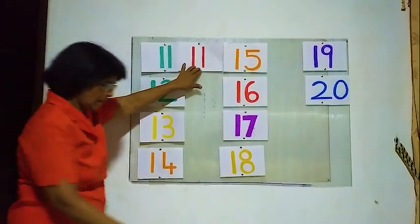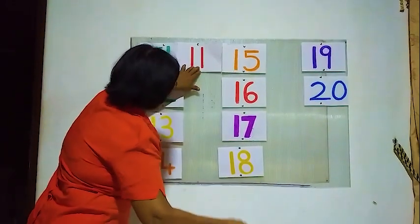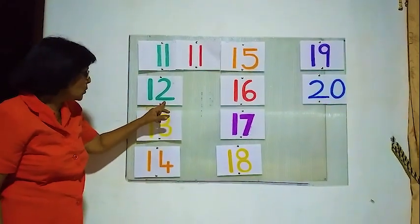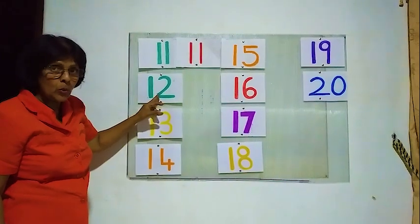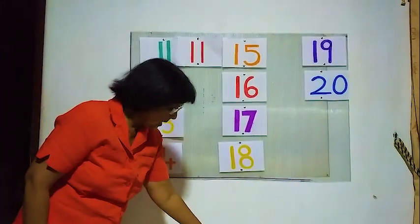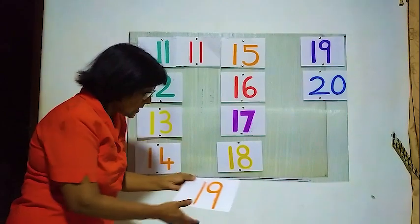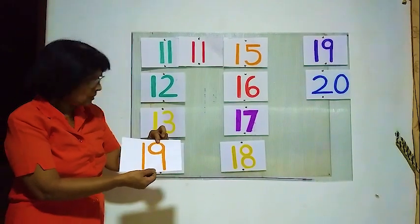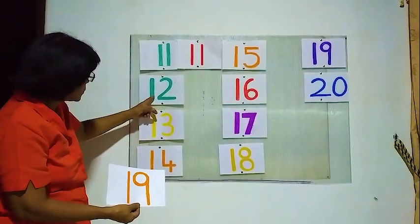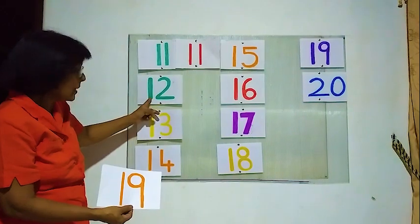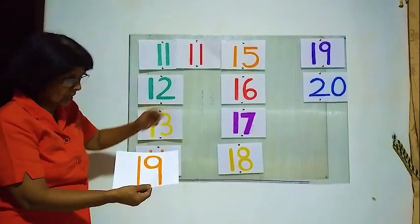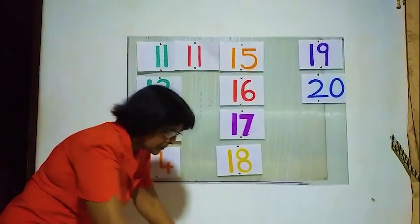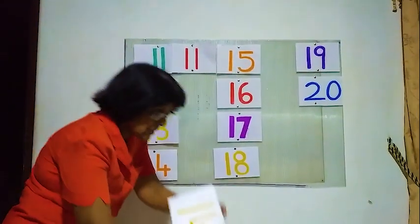Now what's the next number? 1 and 2 — 12! Now we have to find number 12. Is this number 12? 1 and 9 — is this number 12? No. This is 1 and 2, and then this is 1 and 9 — this is wrong. We will see this one. This is number 12.